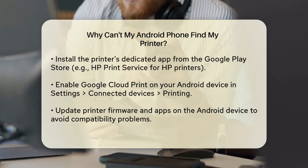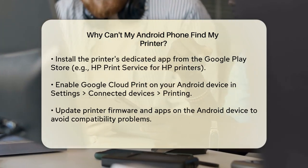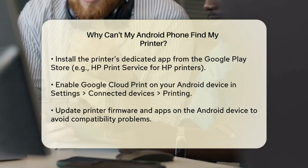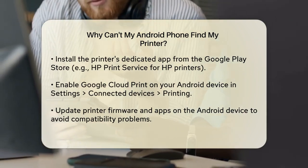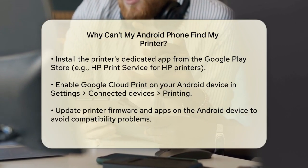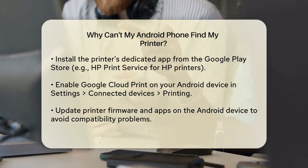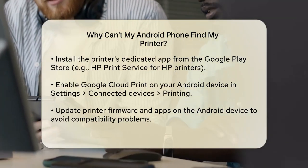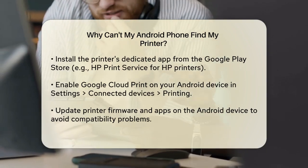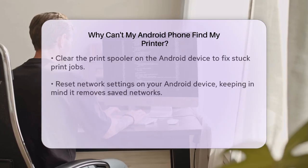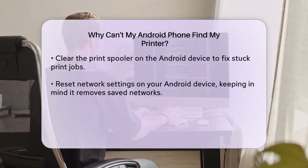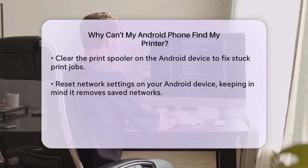Ensure that Google Cloud Print is enabled on your Android device. Go to Settings, Connected Devices, Printing, and toggle the switch to turn it on if it is not already enabled. Also update your printer firmware and the printer app or driver on your Android device, as outdated firmware or apps can cause compatibility issues.